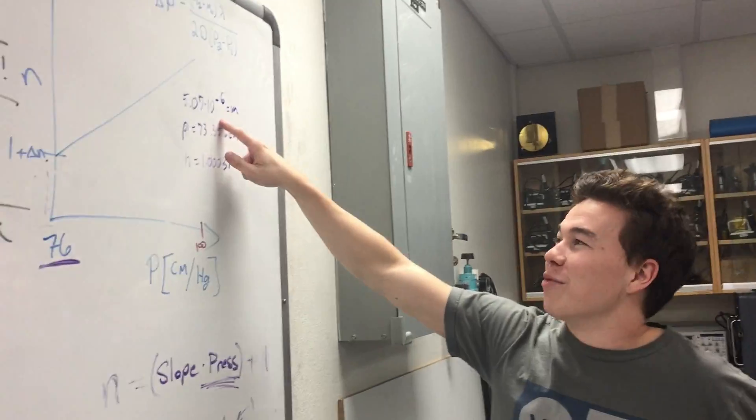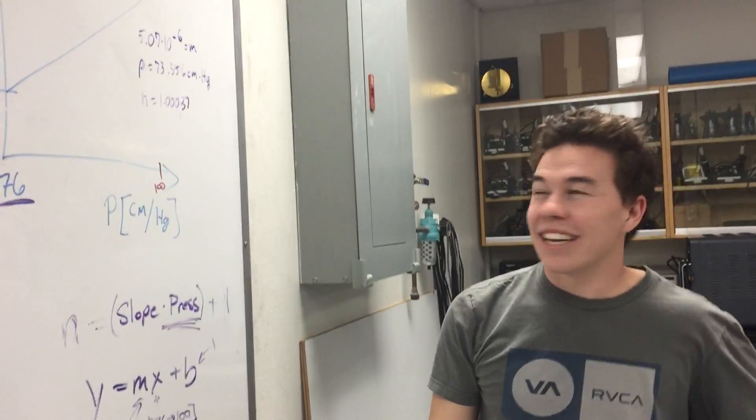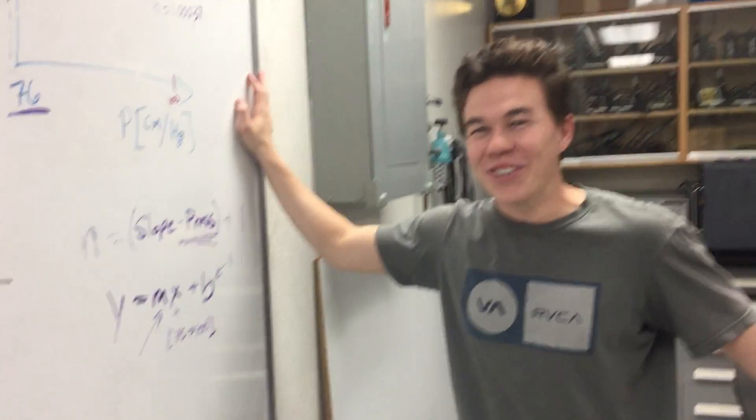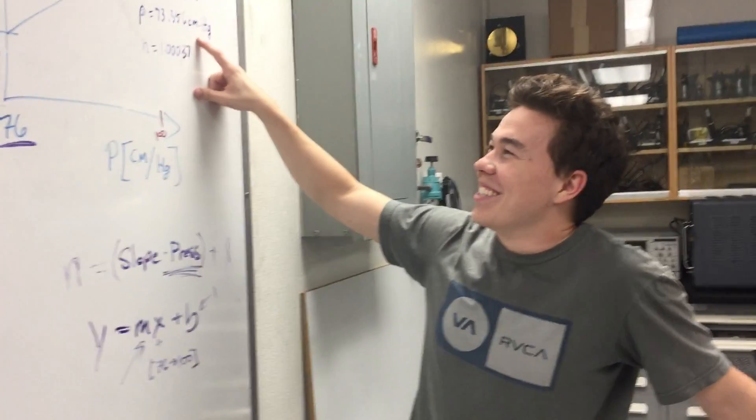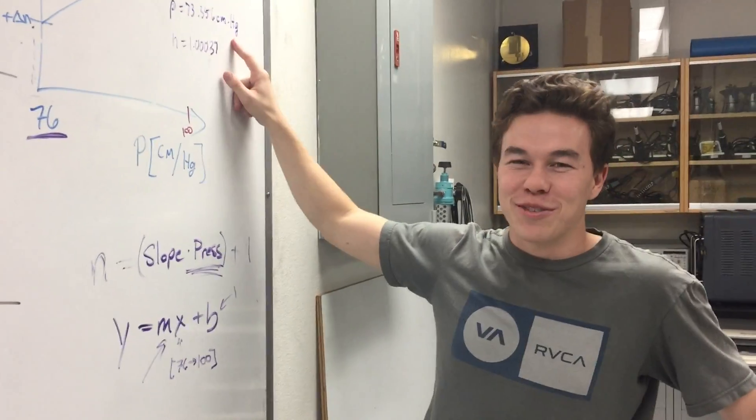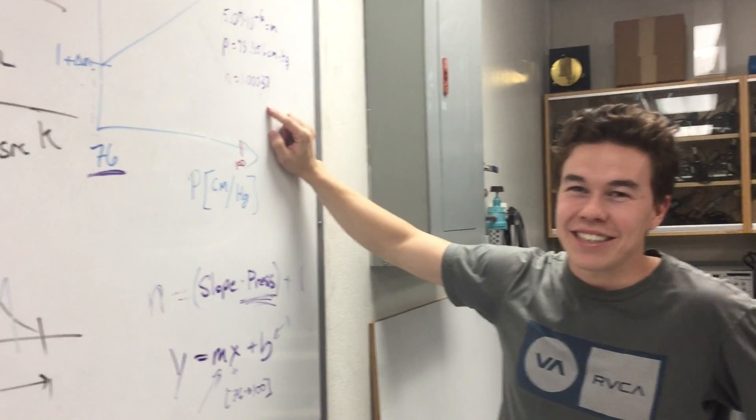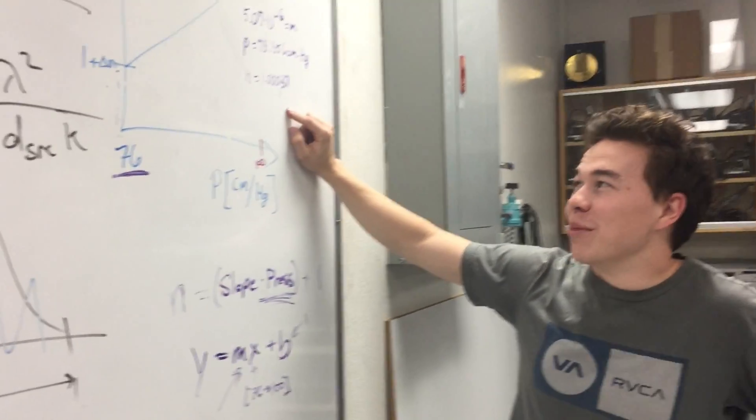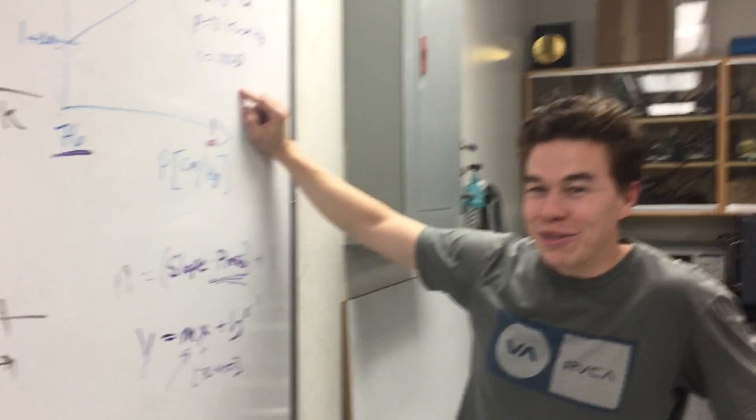Doing this, we found a slope of 5.07 times 10 to the negative 6. We found a pressure in the room of 73.356 centimeters of mercury, and this gave us an index of the air in the lab to be 1.00037.